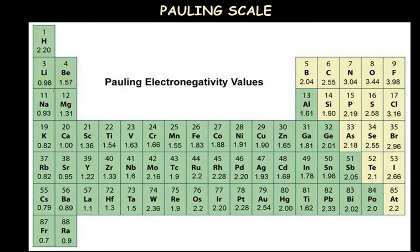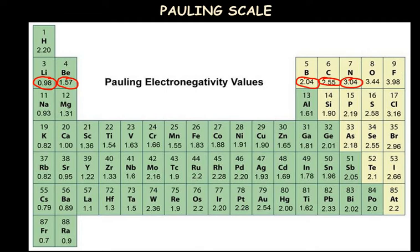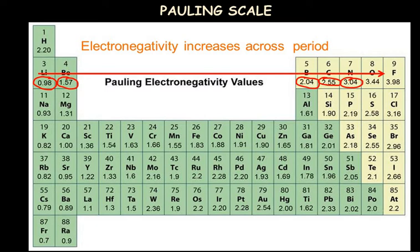Looking at some values on the Pauling scale: lithium has 0.98, beryllium 1.57, boron 2.04, and so on. Note that Pauling scale values have no units. Observing these values, they increase gradually along the period from left to right — from lithium towards fluorine. Noble gases in group 8 are not considered as they have no electronegativity since they are inert. So electronegativity increases across the period from left to right.